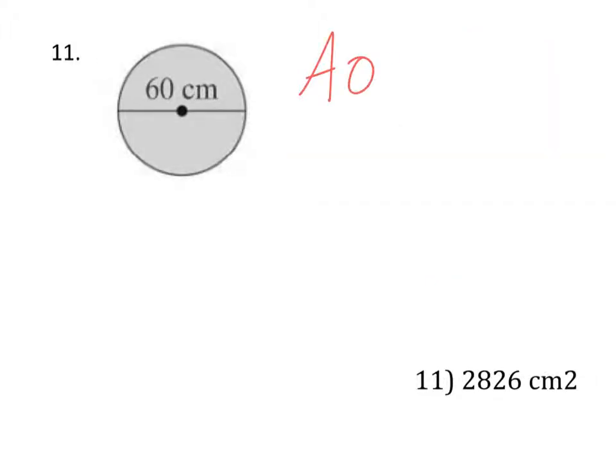Alrighty, so area of a circle is pi r squared. Radius is halfway across. What I've actually given you here is the diameter all the way across, so we're concerned with the radius halfway across, which is 30.